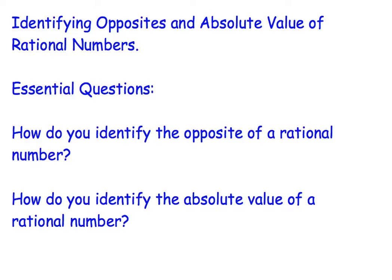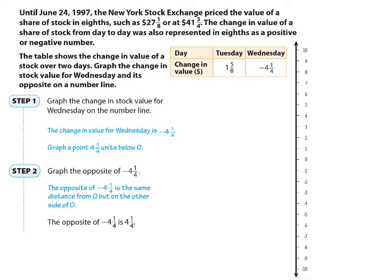We're going to look at a couple of examples. Our first example is from the book — if I'm not mistaken, it's on page 56. There's a statement that says until June 24, 1997, the New York Stock Exchange priced the value of a share of stocks in eighths, such as $27 and an eighth dollars, or $41 and three quarters dollars. Three quarters is a multiple of one eighth. The change in value of a share of stock from day to day was also represented in eighths as a positive or negative number. There's a table showing the change in value of a stock over two days.